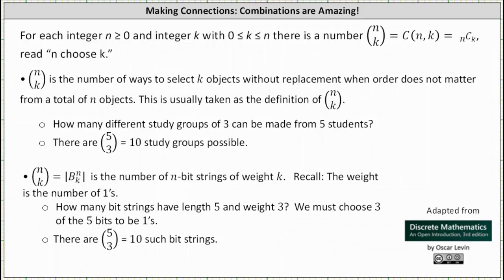We have solved a lot of problems recently using combinations, and therefore I thought it'd be helpful to pause and take a look at some of the amazing applications of combinations. To begin, here are three common ways to denote n choose k. n choose k is the number of ways to select k objects without replacement when order does not matter from a total of n objects. This is usually taken as the definition of n choose k.